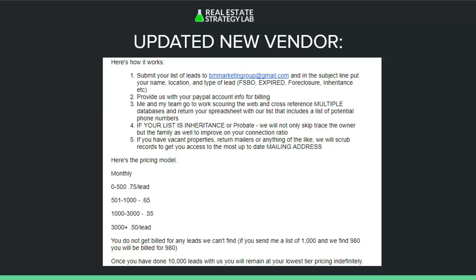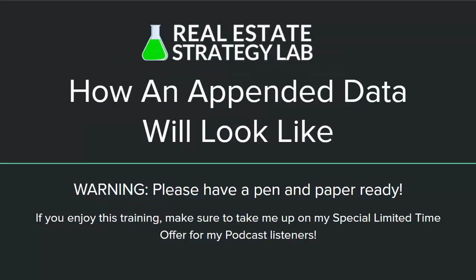I highly recommend locking in and getting your pricing grandfathered at the lowest tier possible — that's what I've done, because pricing does change with tier two companies. The data quality doesn't change, but pricing does as they grow, because they're looking for clients appending data in bulk — hundreds of thousands of records. As they scale, they'll stop working with smaller clients. So now let's get into the next part: how appended data will actually look like. I took this training from my one-year coaching program and I'm inserting it right after this.